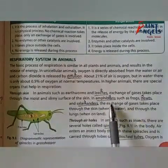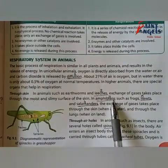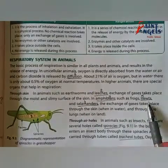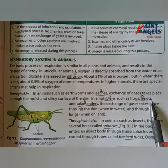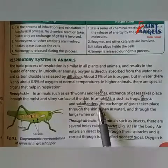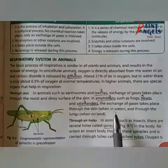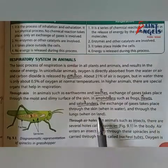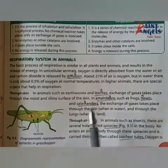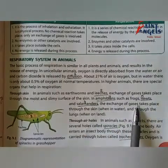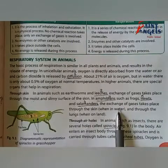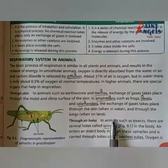In amphibians — animals that live both on land and in water, such as frogs (mandak), newts, and salamanders — exchange of gases takes place through the skin when in water, and through the lungs when on land. So these animals breathe through their skin when in water and through their lungs when on land.